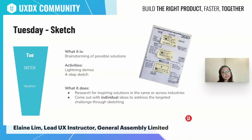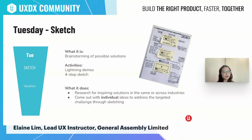Bringing that challenge into the second day is where all the ideas will come. The team will do brainstorming through a process called the four-step sketch, where they will work alone together. This concept is interesting because they are encouraged to work individually so that there is time to develop ideas, get inspiration, and think deeper into the problem space. This also prevents groupthink where the team converges on a single solution, so the resulting outcome on Tuesday is diverse ideas that can work to solve the problem.